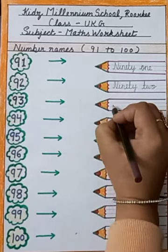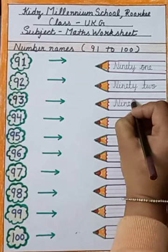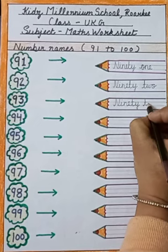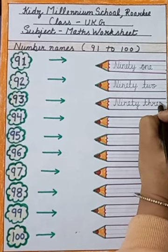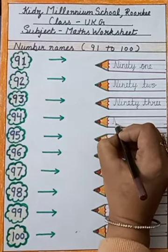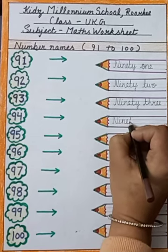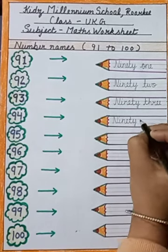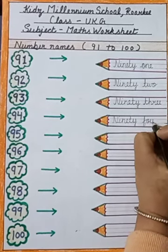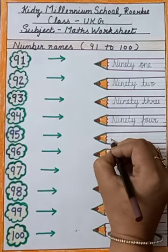Next is 93. Spelling is N-I-N-E-T-Y, ninety, T-H-R-E-E, three. 93. Next is 94. Spelling is N-I-N-E-T-Y, ninety, F-O-U-R, four. 94.